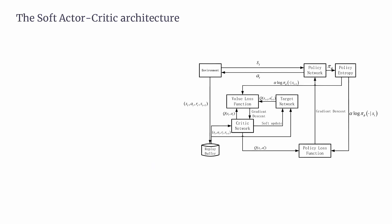Now let's explore how Soft Actor-Critic architecture achieves this. The first key component is the Actor Network. Think of the actor as the decision maker — it's a neural network that produces a probability distribution over actions for a given state. SAC uses a stochastic policy, meaning the agent doesn't stick rigidly to one action, but explores a range of possibilities. This flexibility is key for adapting to dynamic environments.